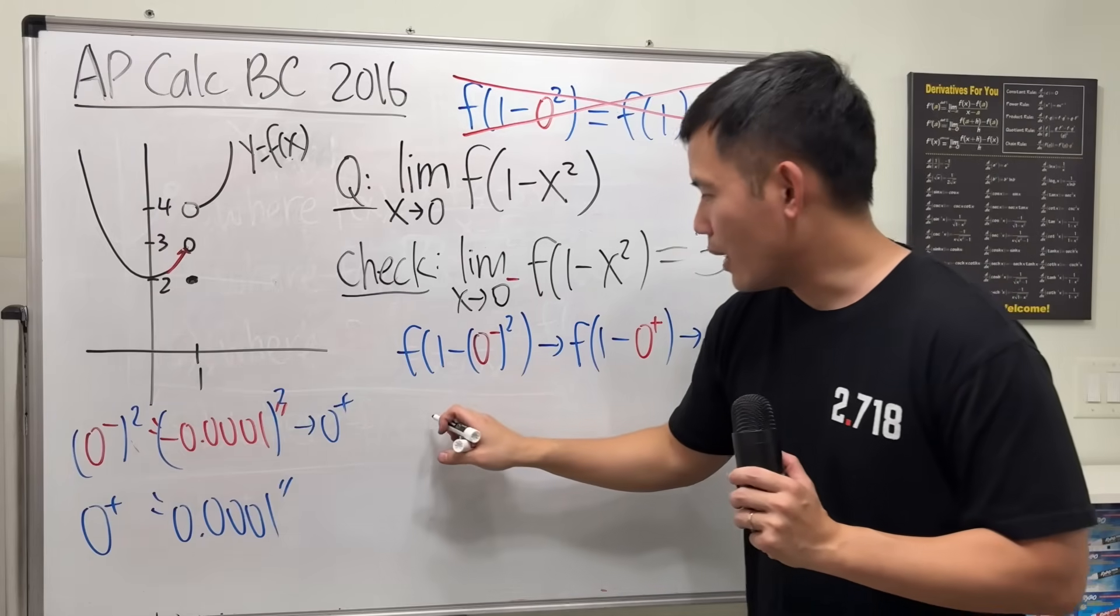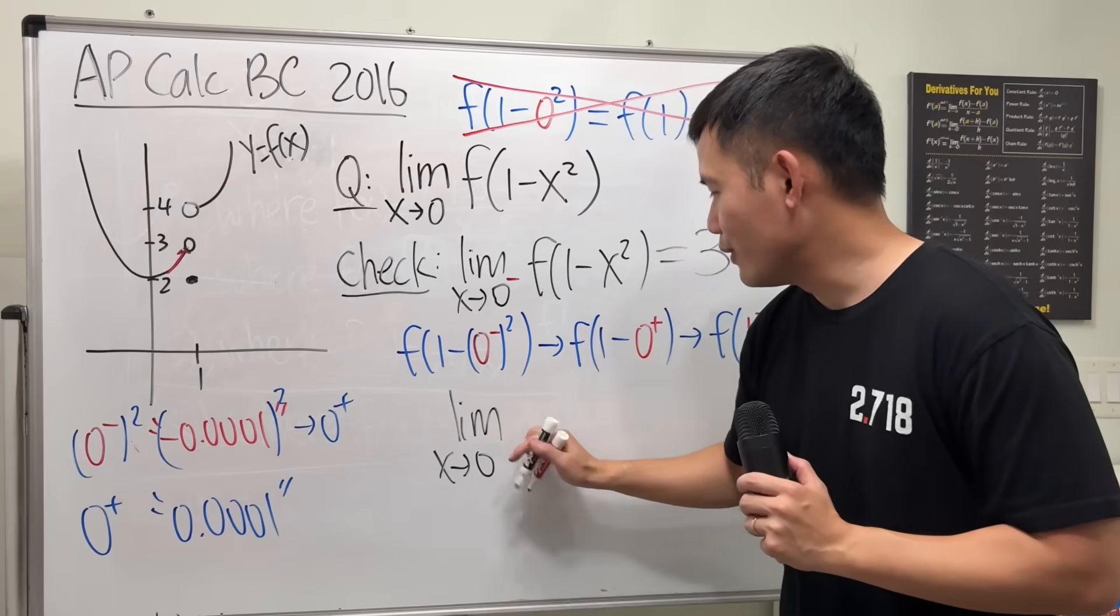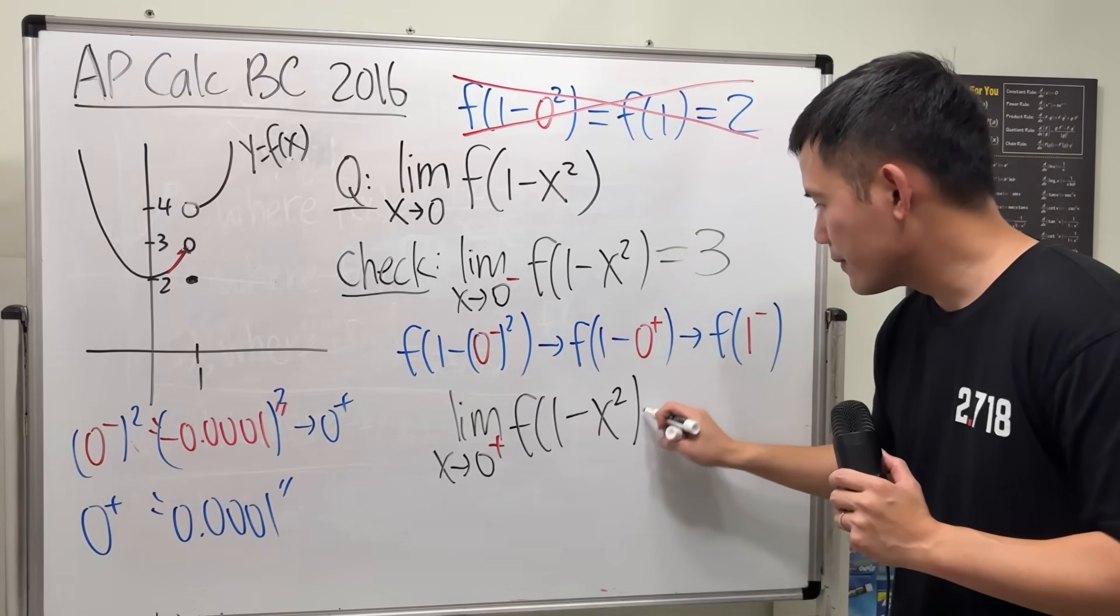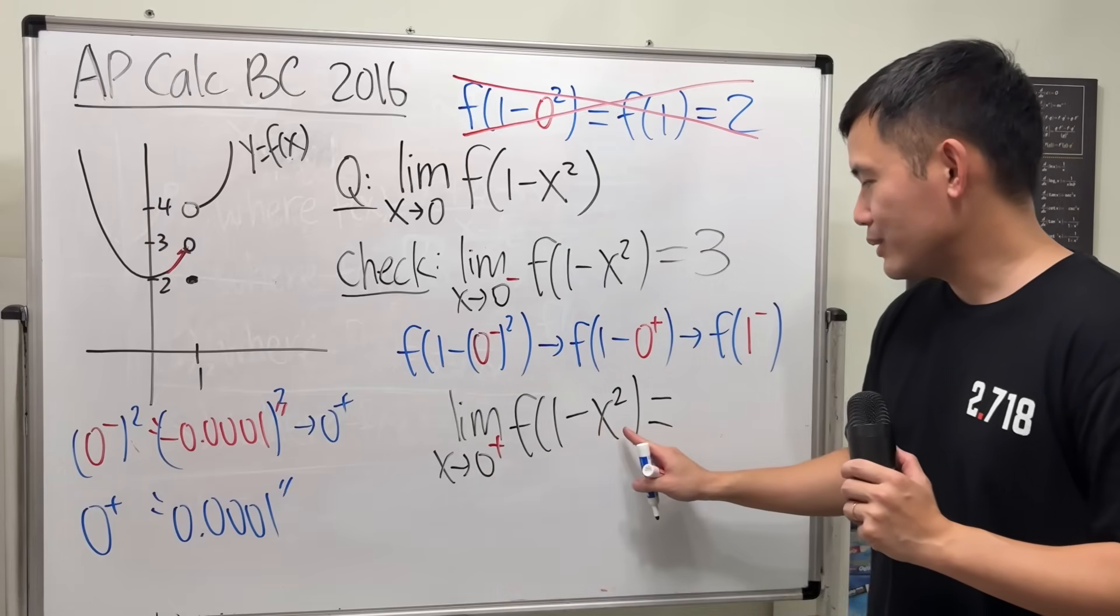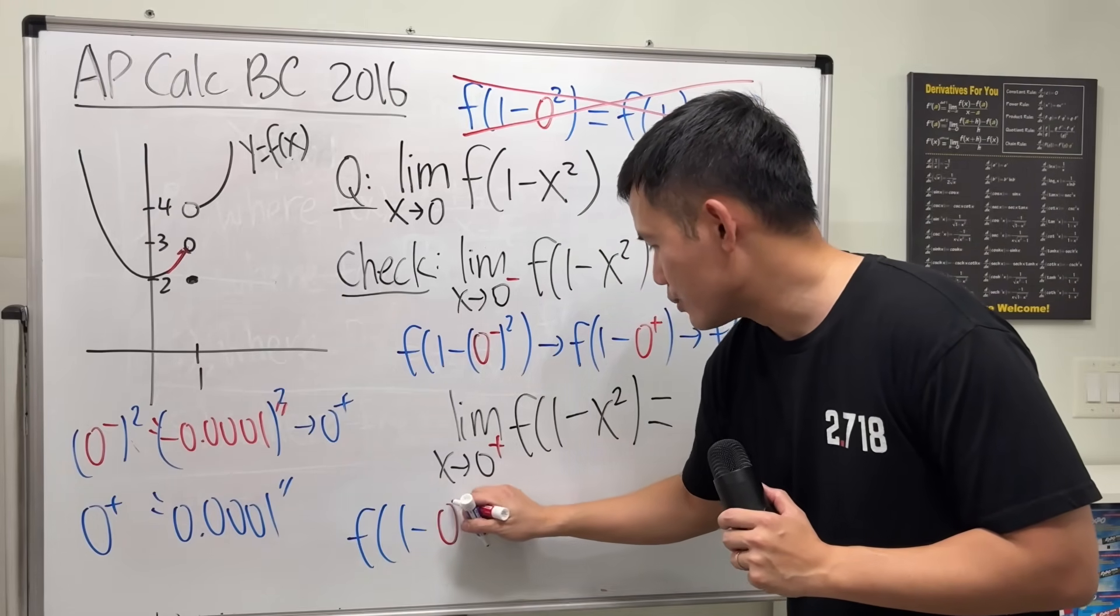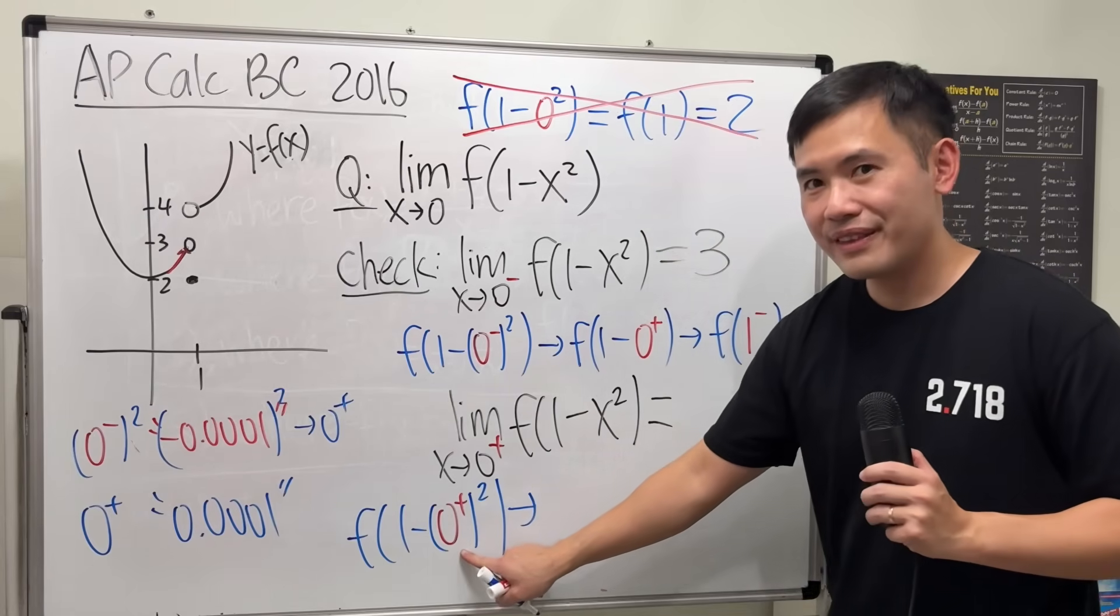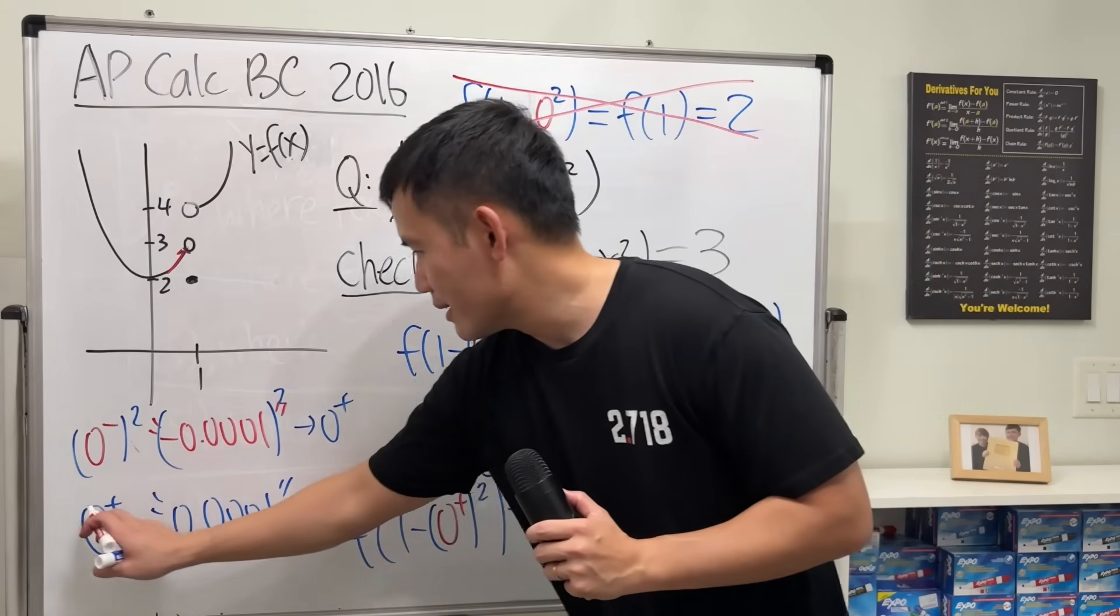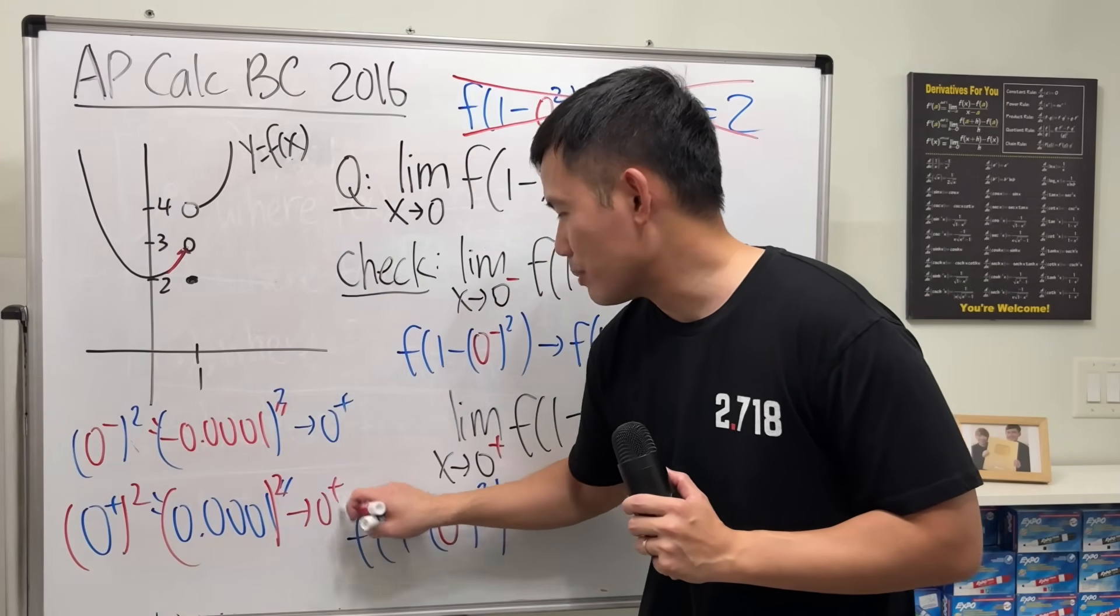Now, we will also have to check the limit as x is approaching 0 from the positive direction. And this is still the same function. Now, do the same thing. We plug in 0⁺ into this x. So, that's f(1-(0⁺)²). We are going to do pretty much the same thing. 0⁺ squared. Guess what? Now, it's still going to be 0⁺.